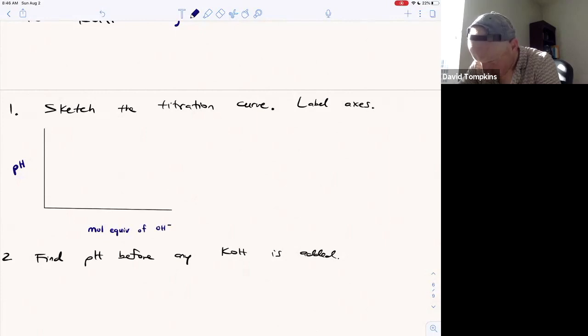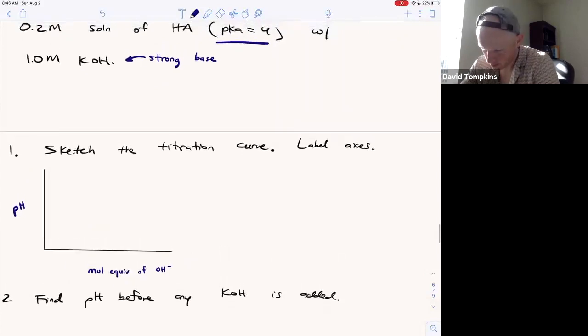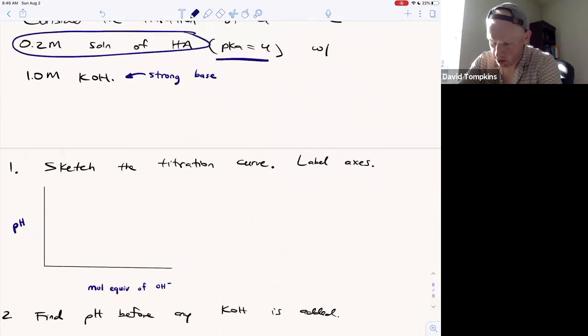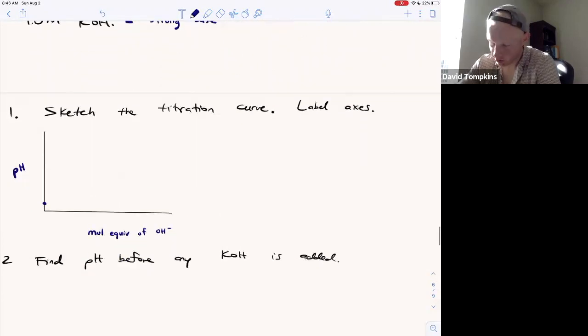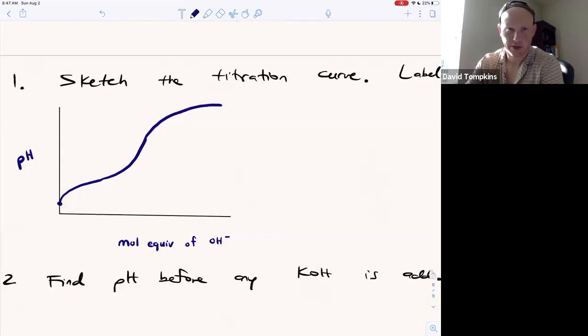In this case, we're adding potassium hydroxide, a strong base. If we start with a 0.2 molar solution of a weak acid, the pH should start out low or acidic, and it will gradually climb until we reach a buffer region. Eventually, an equivalence point will be obtained, and then the titration will be complete.